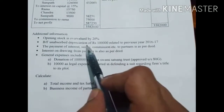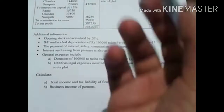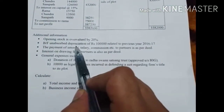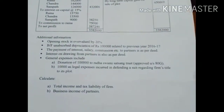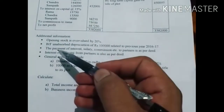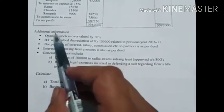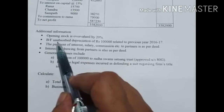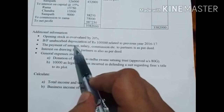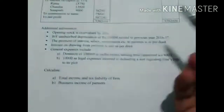Brought forward of unabsorbed depreciation of 1 lakh relates to the previous year 2016-17, meaning last year's depreciation brought forward to this year. This amount will be subtracted from the book profit. After subtracting from book profit, we then calculate the deduction under Section 40(b). So, brought forward unabsorbed depreciation is subtracted after getting the book profit.